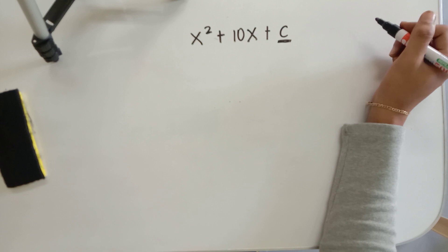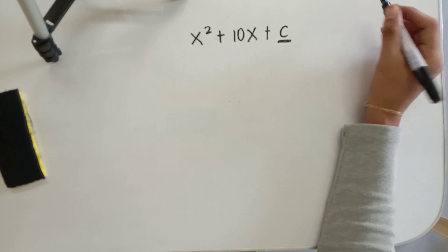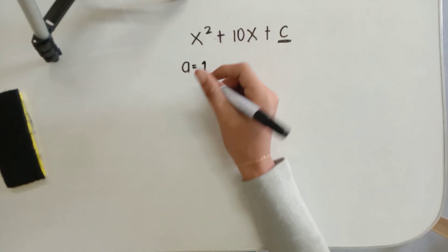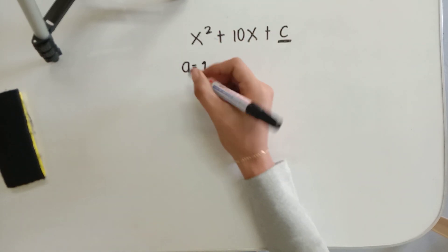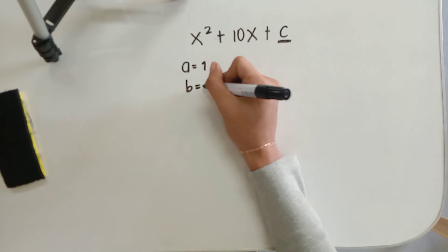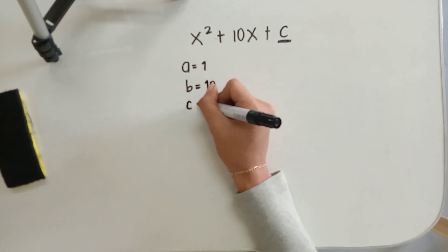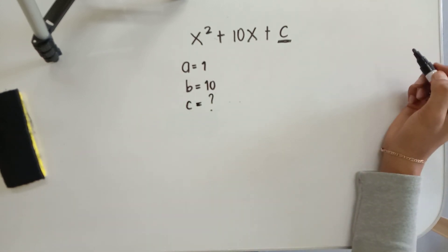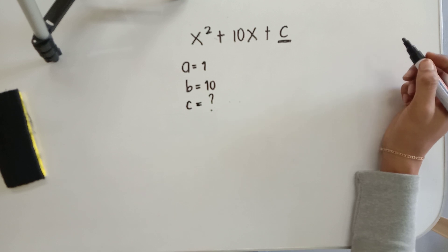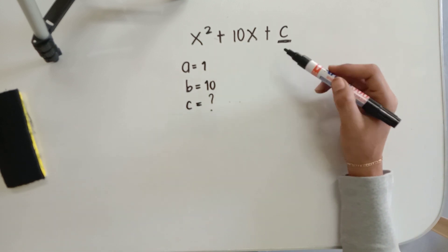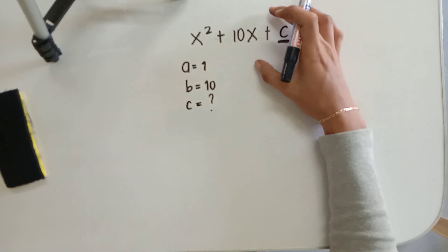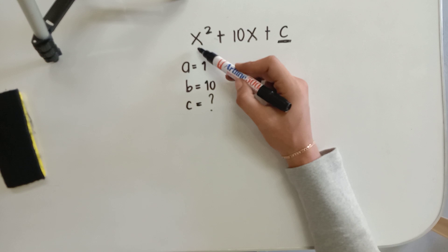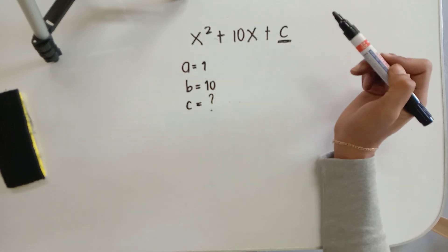We will now identify the coefficients of each term. The coefficient a is equal to 1, which is the coefficient of your first term. B is the coefficient of your second term, that is 10. And c is your constant term, which we are going to find. Take note: we can only complete this quadratic binomial into a perfect square trinomial once the coefficient of your first term is equal to 1.